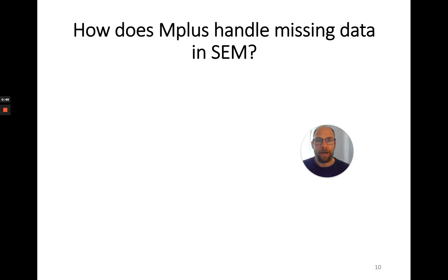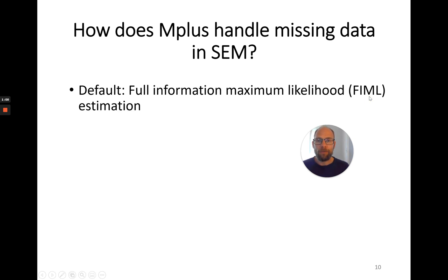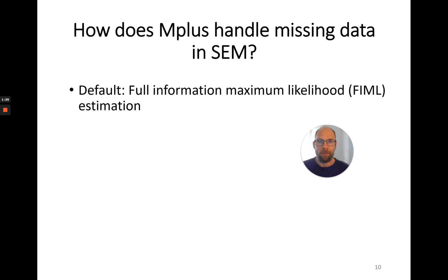First of all, how does Mplus handle missing data when you don't say anything — when you just use the Mplus defaults? When you run a structural equation model or path model in Mplus and you have missing scores in your data set, Mplus will automatically employ full information maximum likelihood estimation with missing data. You automatically get it; you don't even have to ask for it. Mplus will automatically include all scores, even those with missing data, unless a case is missing on all variables in your model.